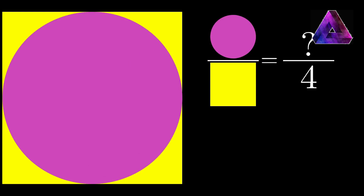And inside it, inscribe the circle. Then consider the portion of the circle's area to the square's area. That's going to give you some ratio of the actual area that you're looking for.